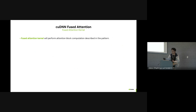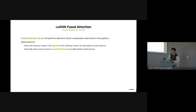cuDNN offers two different kinds of attention kernels. The first is the fused attention kernel, which performs the attention block computation as described by the pattern. There are some optimizations to make the kernel faster. First, it stores the dropout mask in the sign bit of the softmax tensor for backwards — since dropout contains all positive values, the sign bit is unused, so you can save memory this way. Second, the kernel stores some tensors in swizzle format to enable better performance with tensor cores.